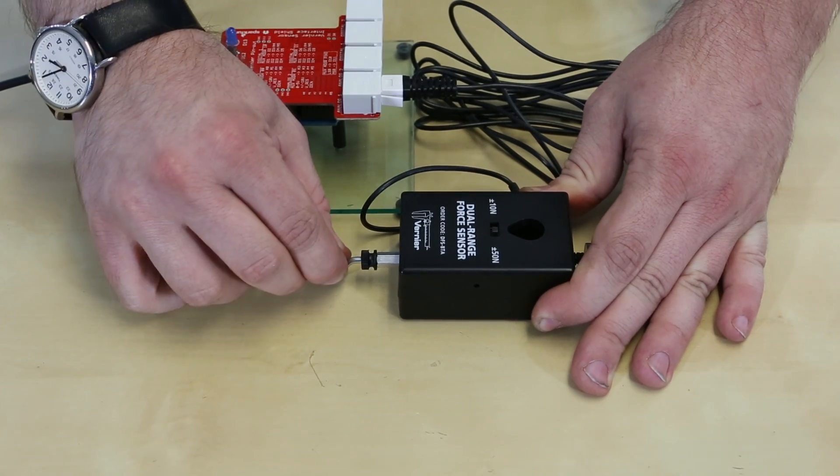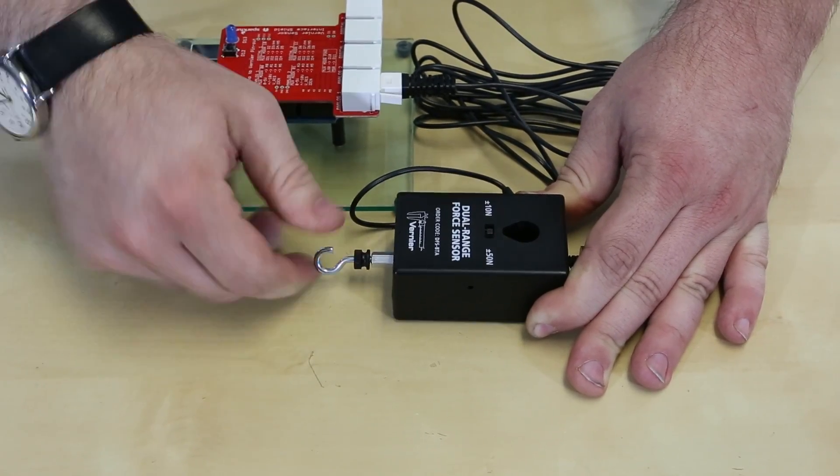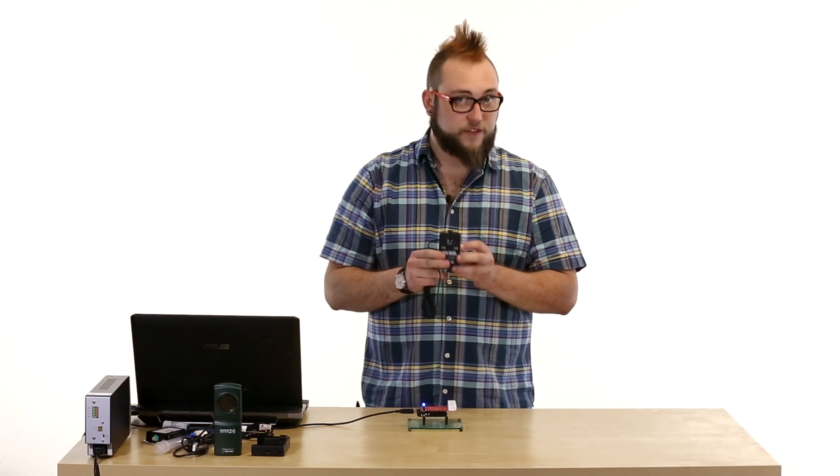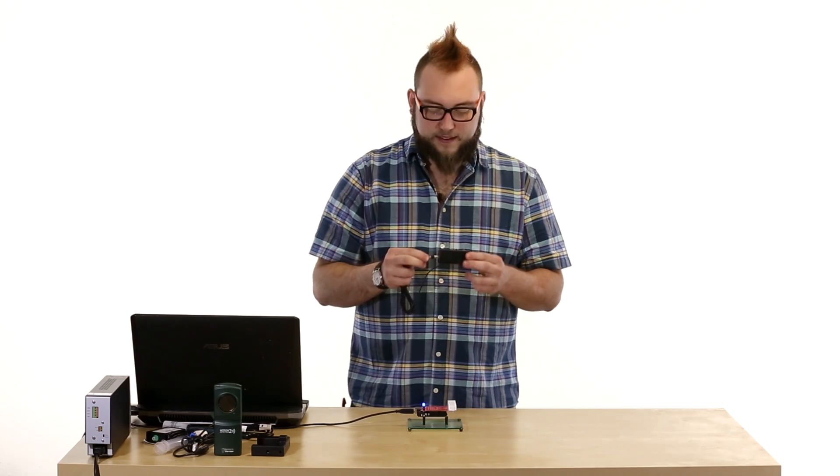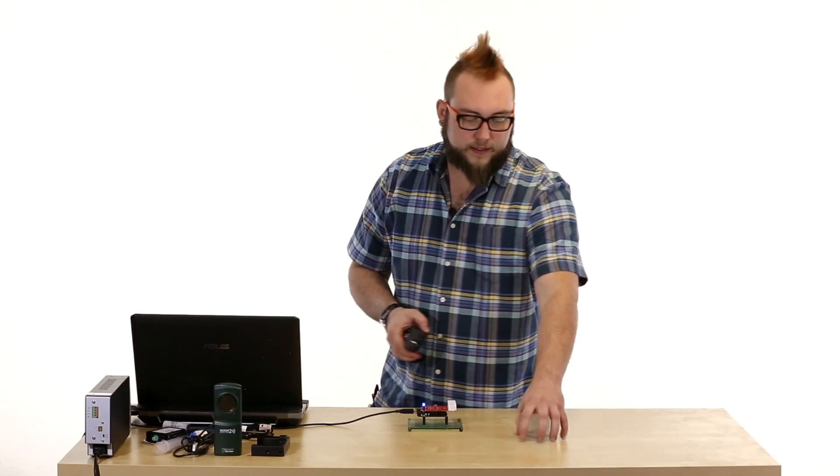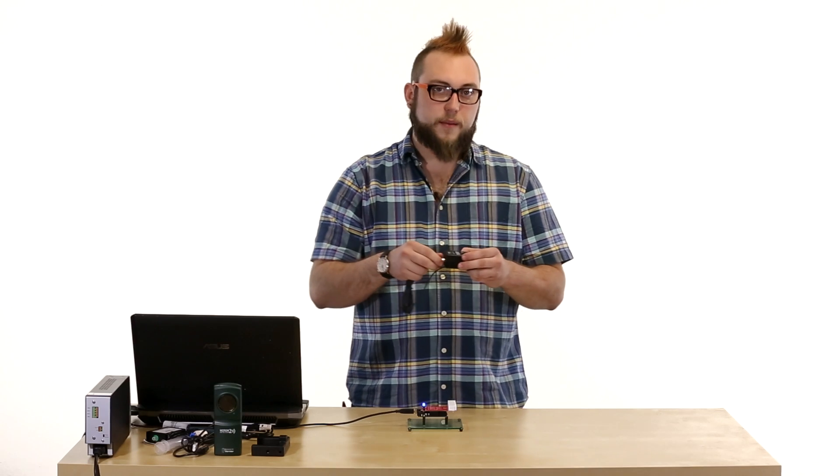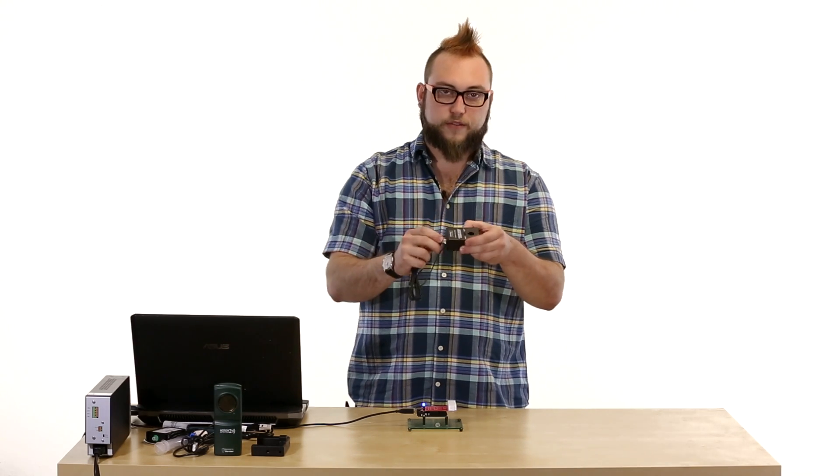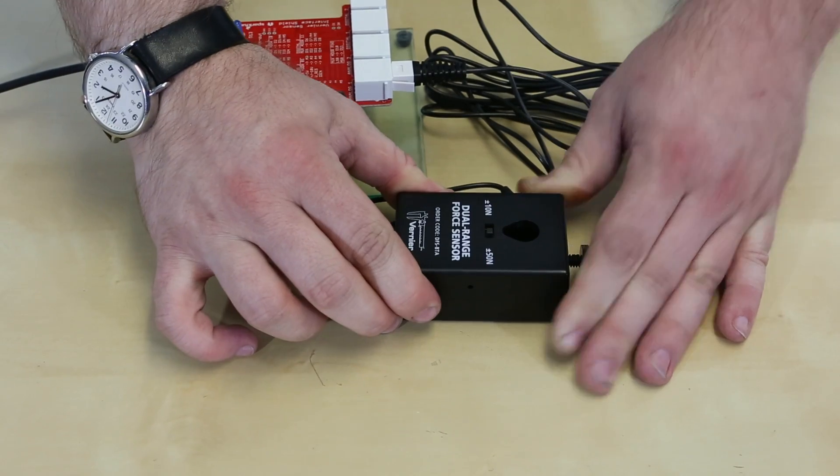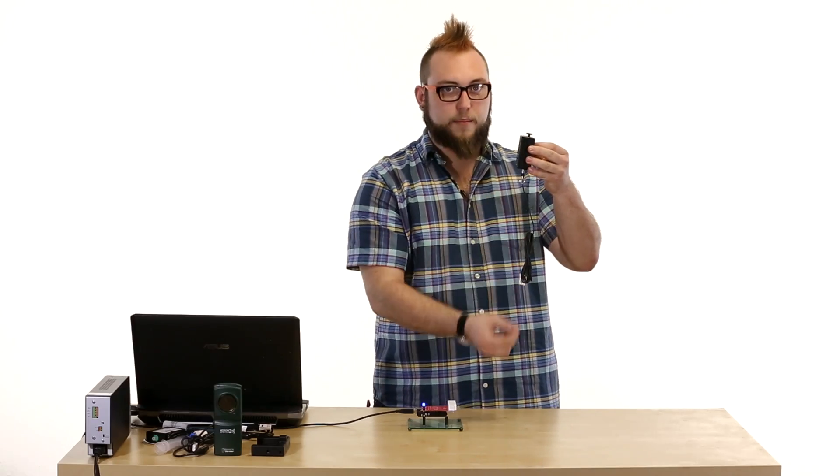First up, we have this force sensor. And this is a dual range force sensor, which means that it will measure both force pulling on this hook and force pushing against it. And it actually has two ranges. So it will measure plus or minus 10 newtons of force, as well as plus or minus 50 newtons of force. Now these are really handy in science classes where you want to measure force, especially if you're studying something like friction, where you want to put a block on the table, hook this hook to it, and then drag it and see how much force it takes to overcome that static friction. This also comes with, you'll notice the hook can unscrew from the end of this sensor. And it comes with a little rubber bumper that you can put on there instead to measure pushing force.